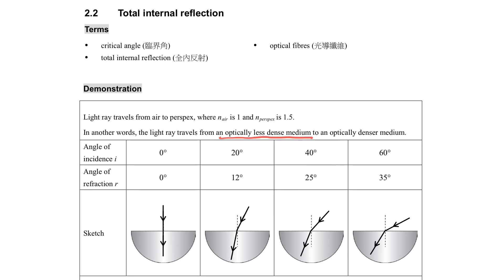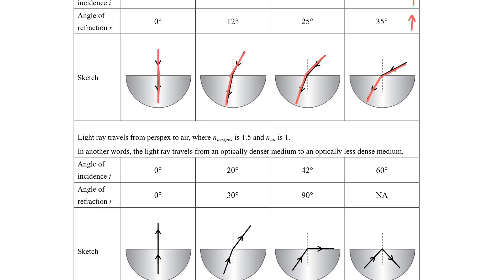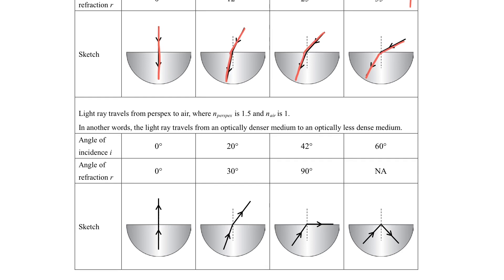You can see in the table it is showing the light ray traveling from the optically less dense medium to an optically denser medium. When the light travels from the optically less dense medium to a denser medium, the light will bend towards the normal. And when the light changes direction, the angle of incidence increases so that the angle of refraction will also increase together. This is the situation we observe.